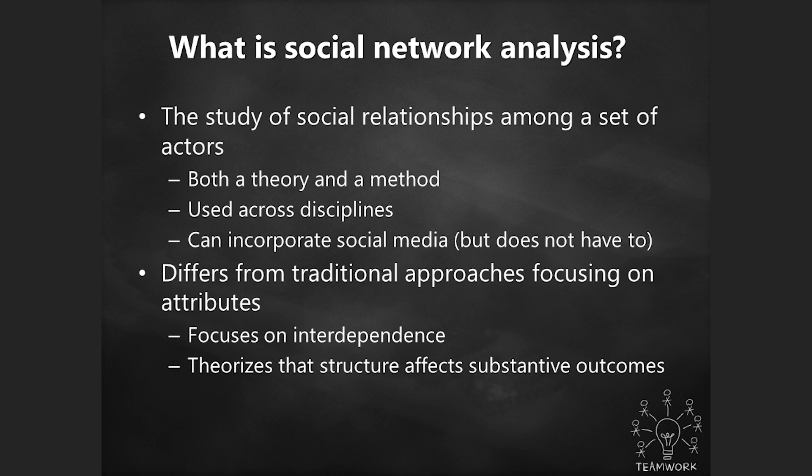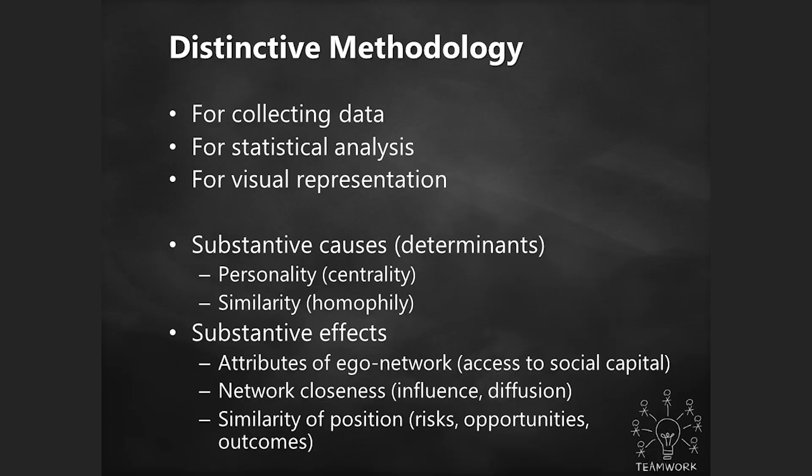Social network analysis differs from traditional approaches that focus on attributes. In public health, a traditional approach might say someone has these health behaviors because of their demographics and personal characteristics. Social network analysis departs from that — yes, they have personal characteristics, but their network also matters. We can explain some health behaviors by the people around them, the resources they have through those people, and what that person thinks those people believe about health. It focuses on interdependence and theorizes that structure affects substantive outcomes — it's not just that we map it, there are changes in behavior based on what we see in the network.